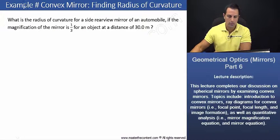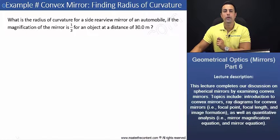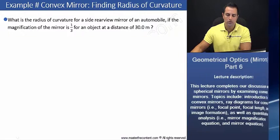Now, here we're being asked: Example, convex mirror, finding radius of curvature. What is the radius of curvature for us?